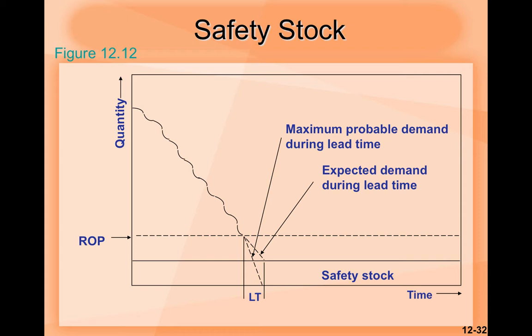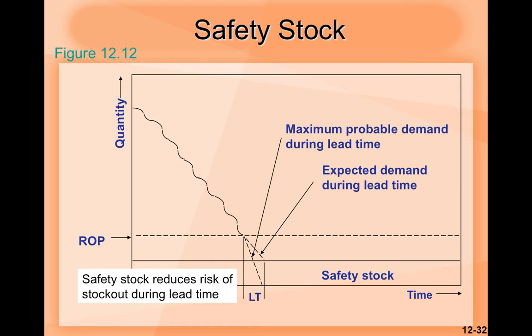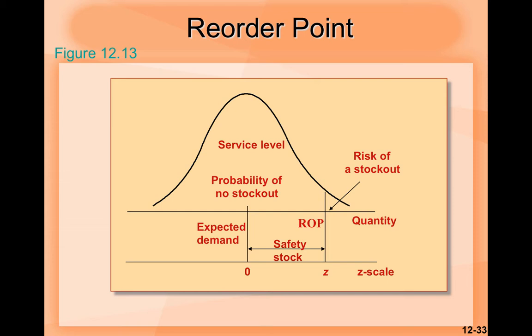Let's look at safety stock in a graph. We have two variables — quantity and time. The first line shows maximum probable demand during lead time; the second shows expected demand during lead time. Safety stock reduces risk of stock-out during lead time. There is also a graph of the reorder point and a graph showing the reorder point based on a normal distribution of lead time demand.